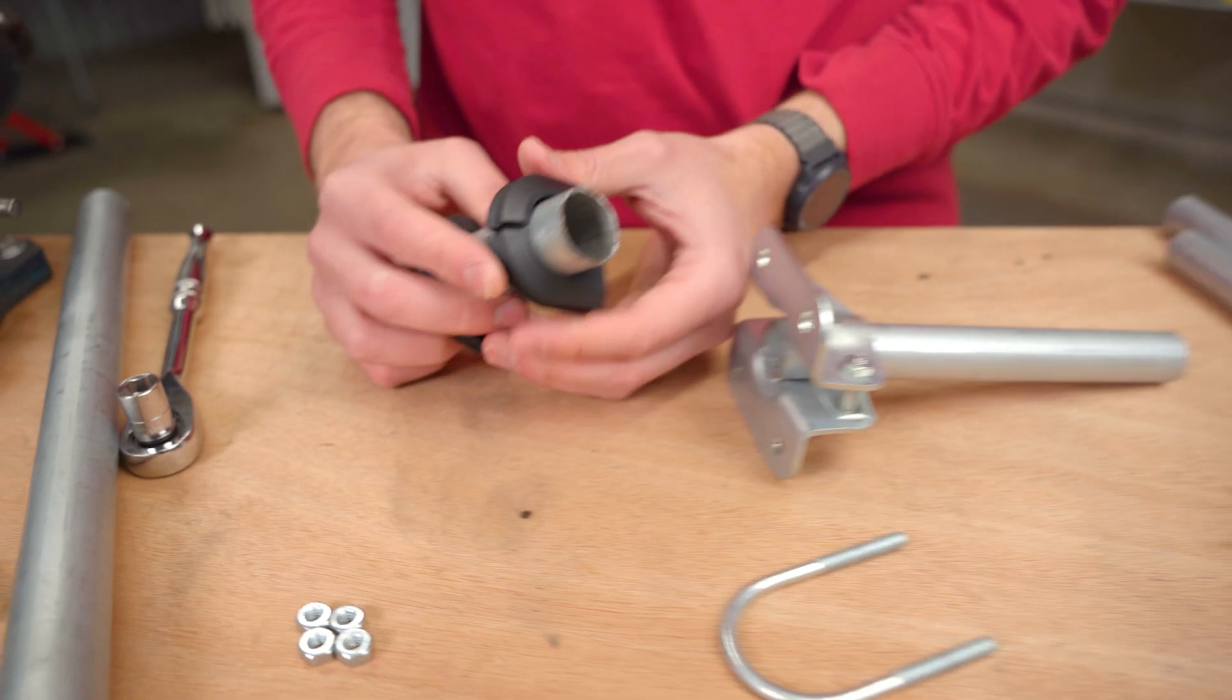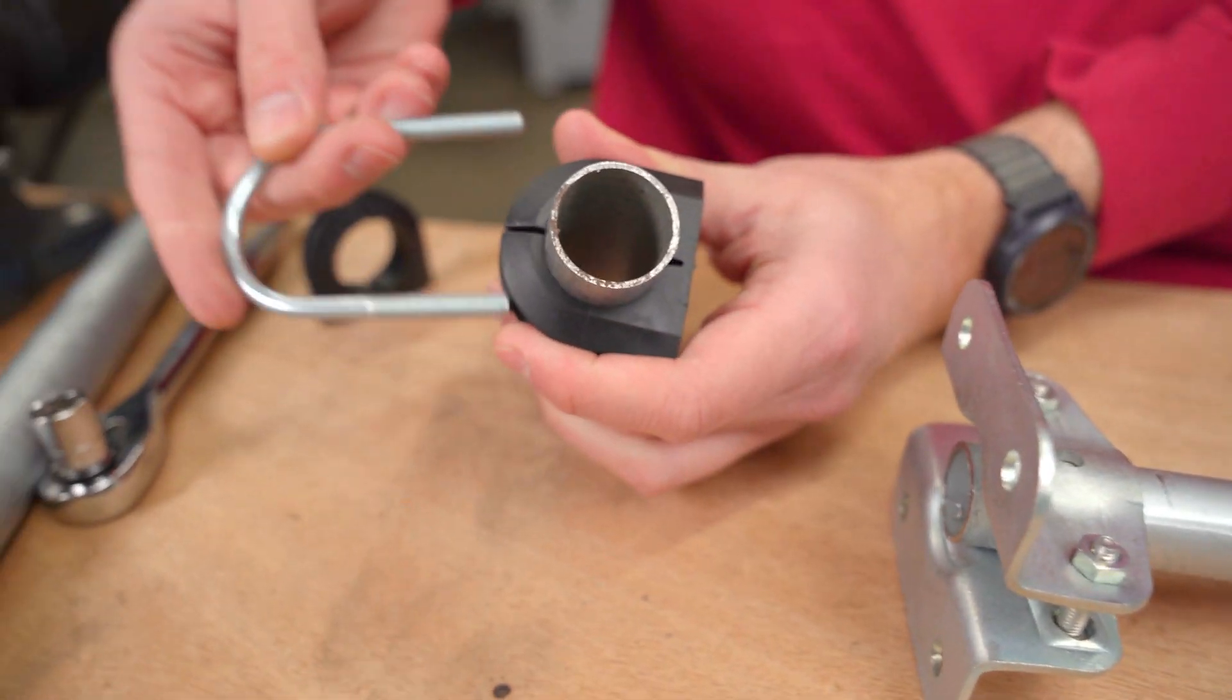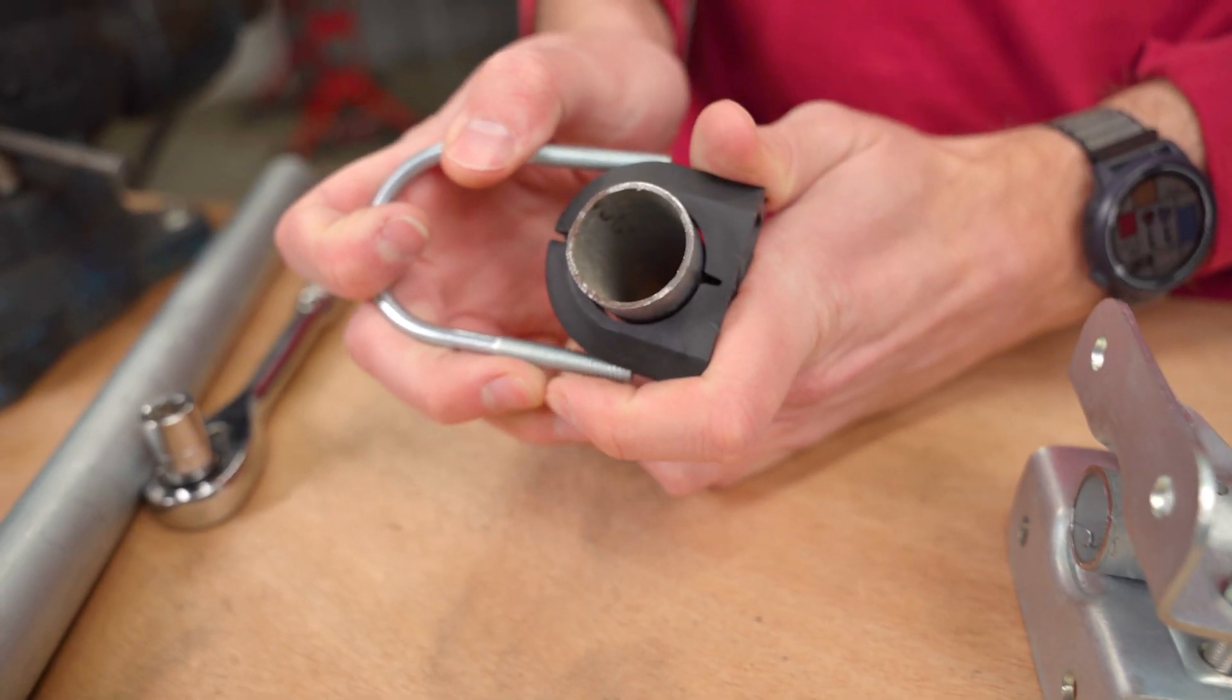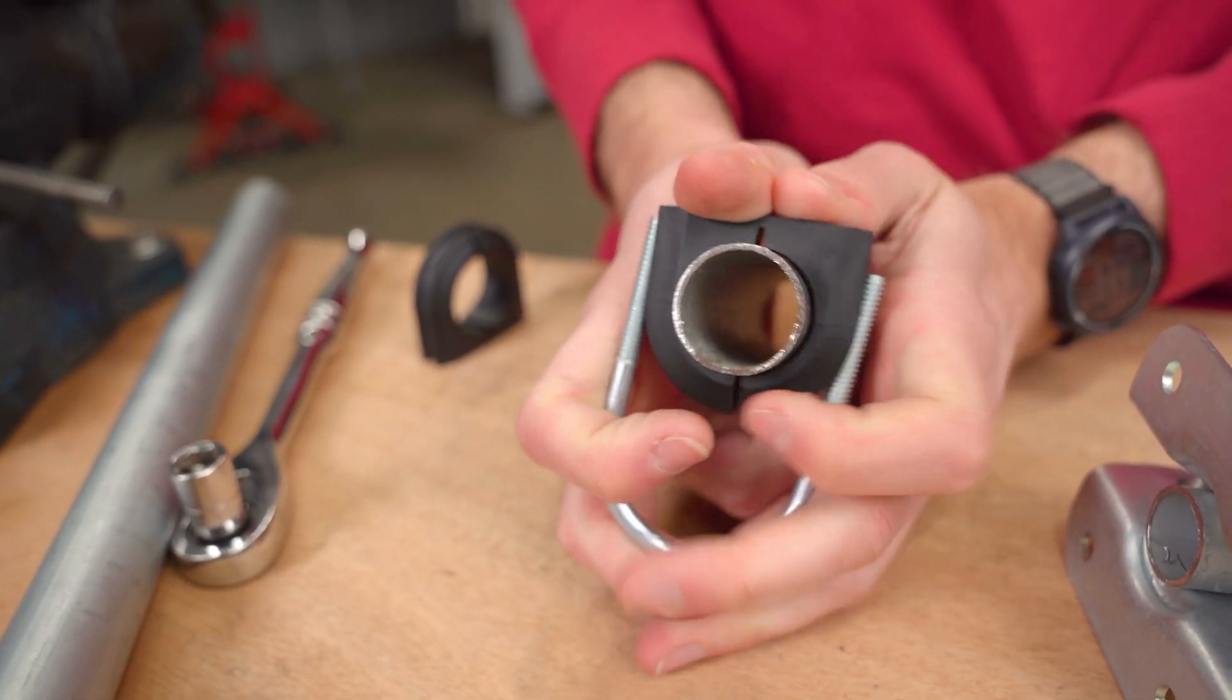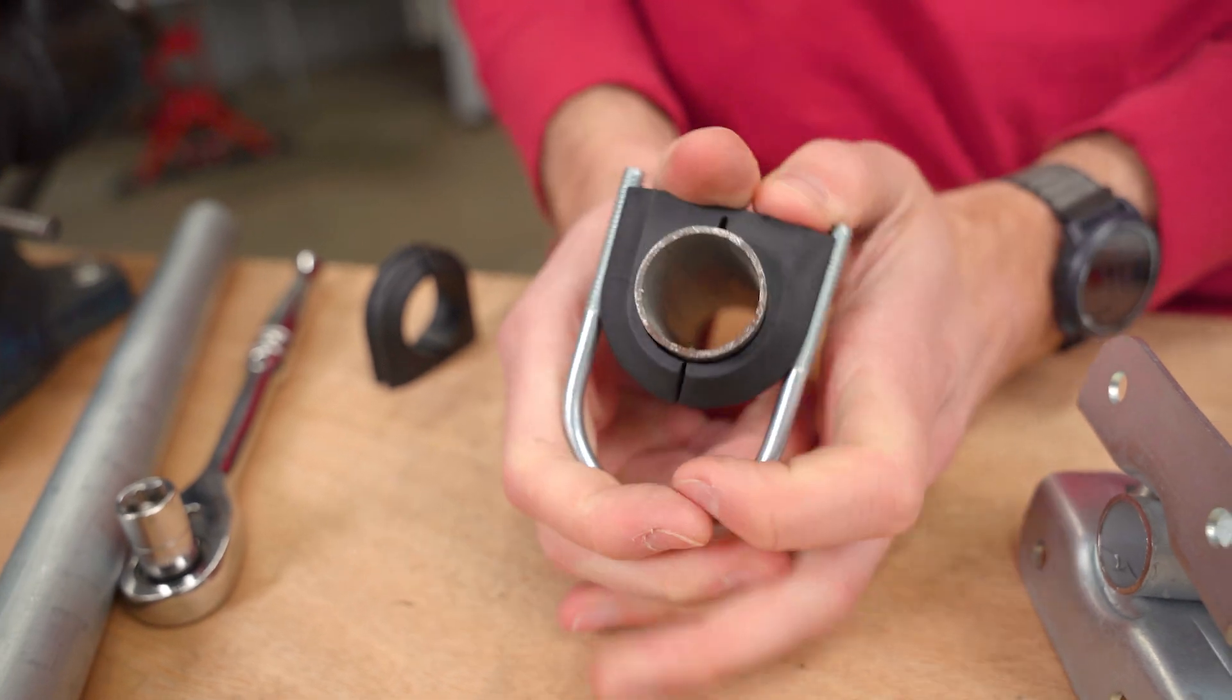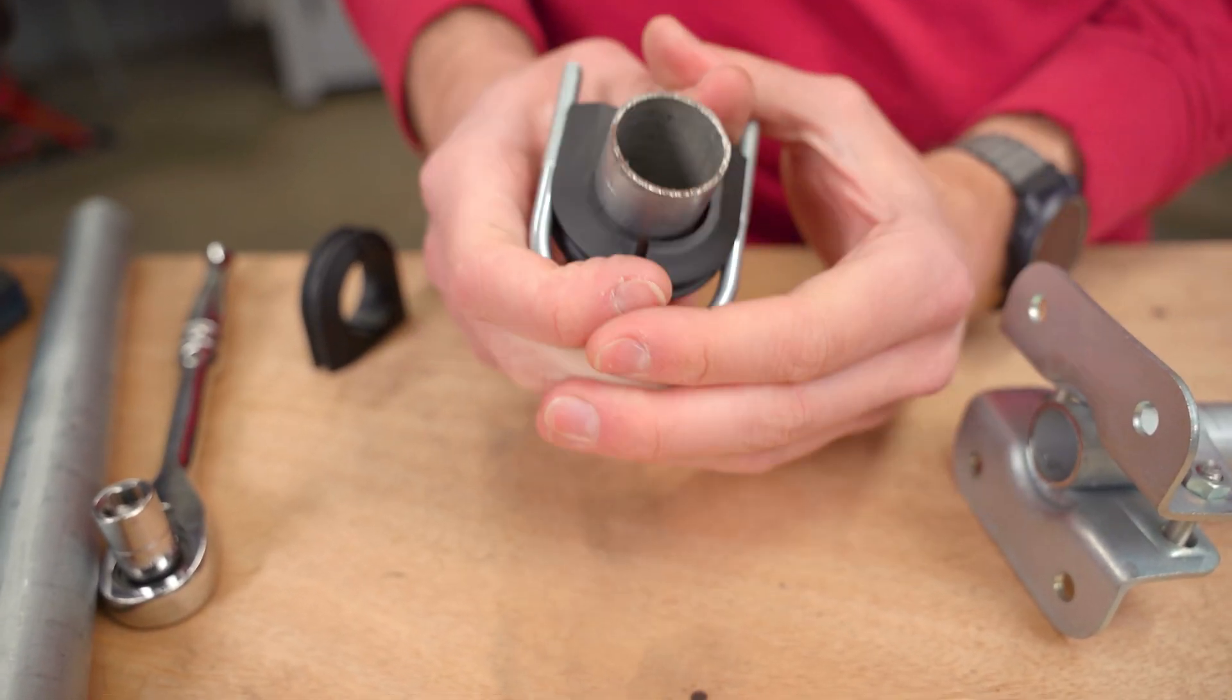Also on McMaster-Carr, they had these vibration dampening blocks that fit inside of the U-bolt. Essentially you can put those on and secure a piece of one-inch EMT conduit, which we found works best in here. It is vibration dampening and you have this block that fits in here.